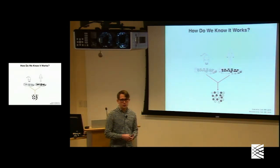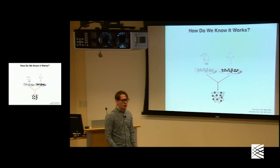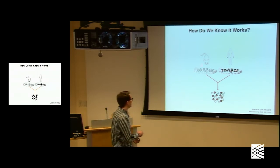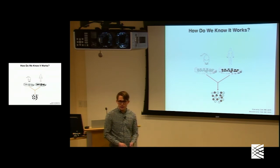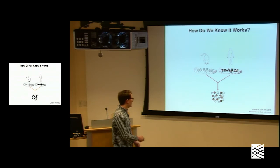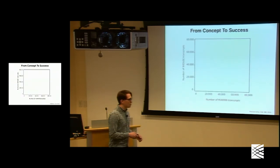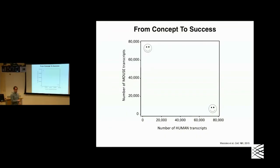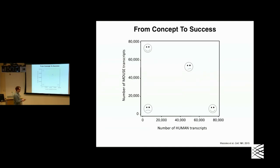So how do we know this actually works? We first did experiments very similar to many of you in the audience. We took mouse cells and human cells — NIH 3T3 and HEK 293s — mixed them together and applied them to the device. If we're doing well, we're out here on the axis, with all cells mapping to either the human or mouse transcriptomes, which gives us a sense of single-cell resolution. If we're here, we're less happy but at least capturing something. But if we're down here, we just sort of go back to the drawing board — we're not capturing anything at all.